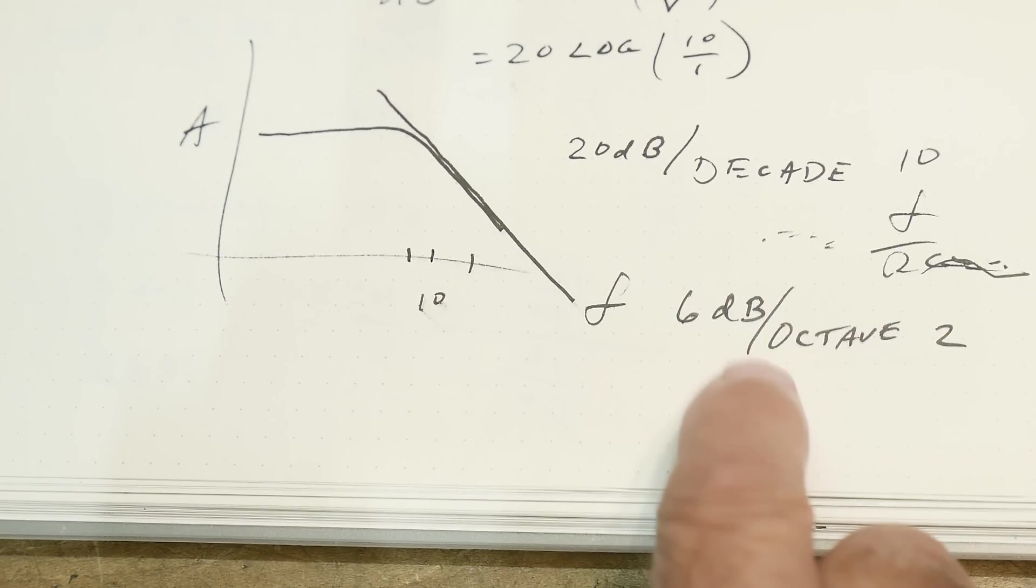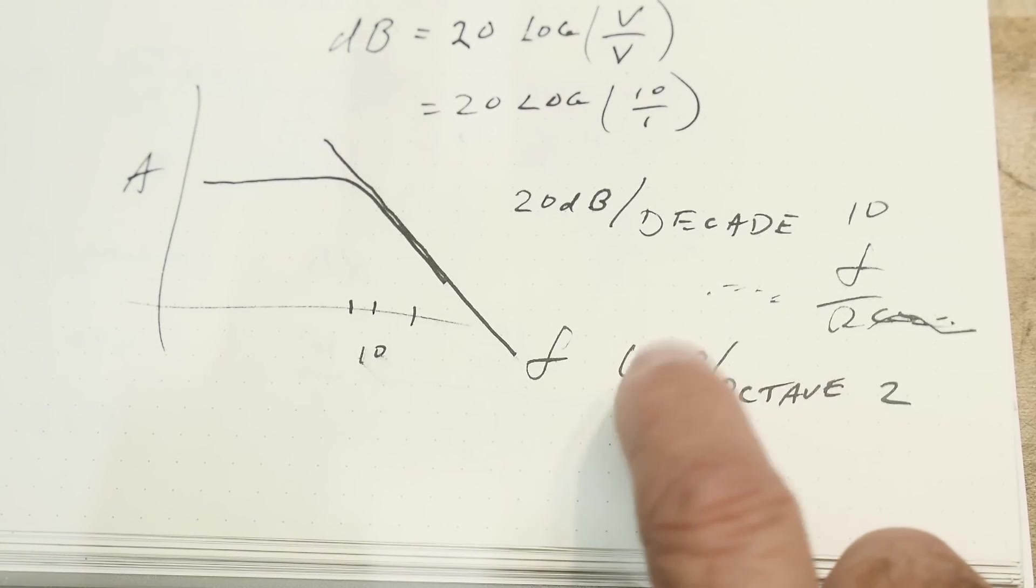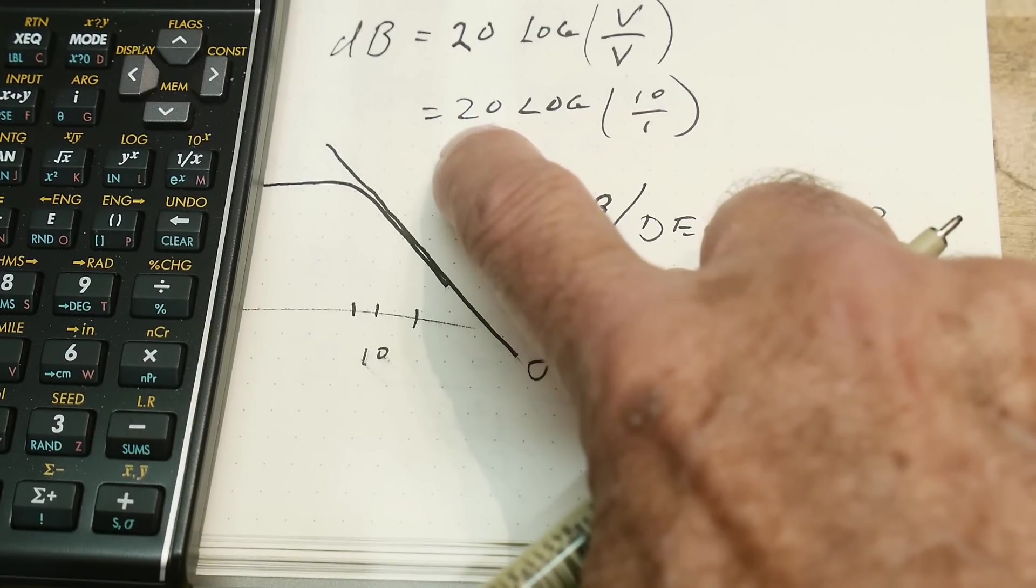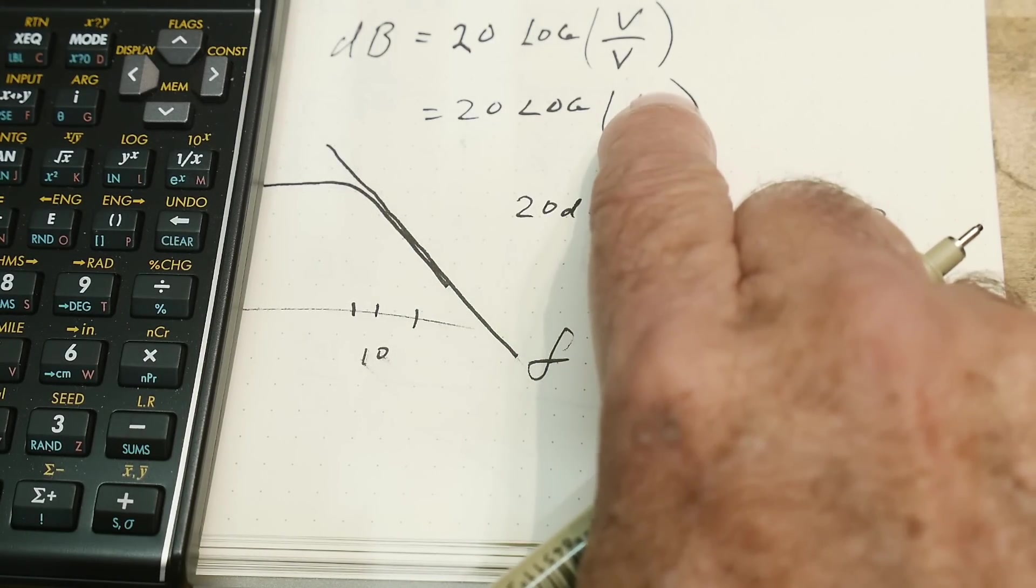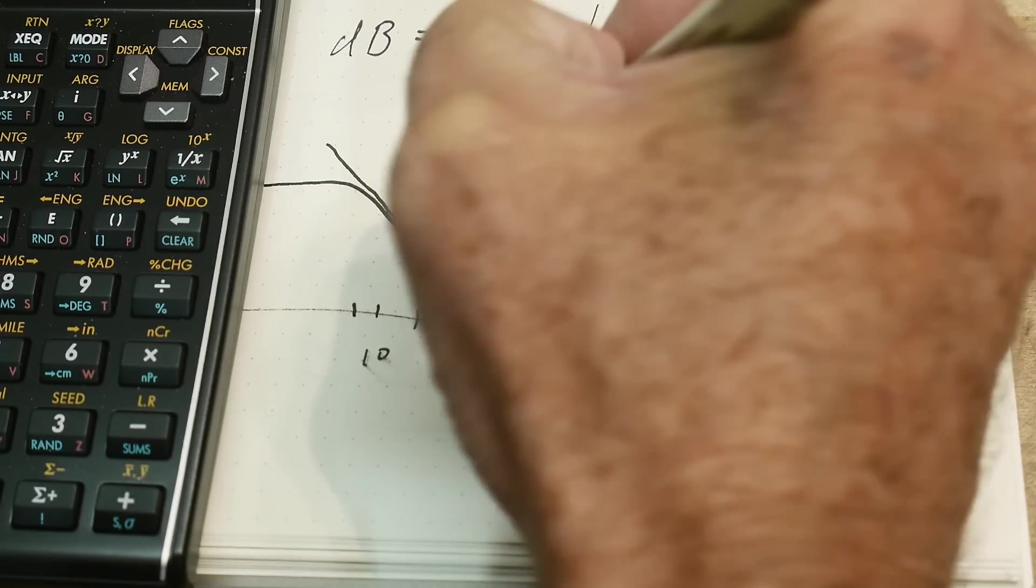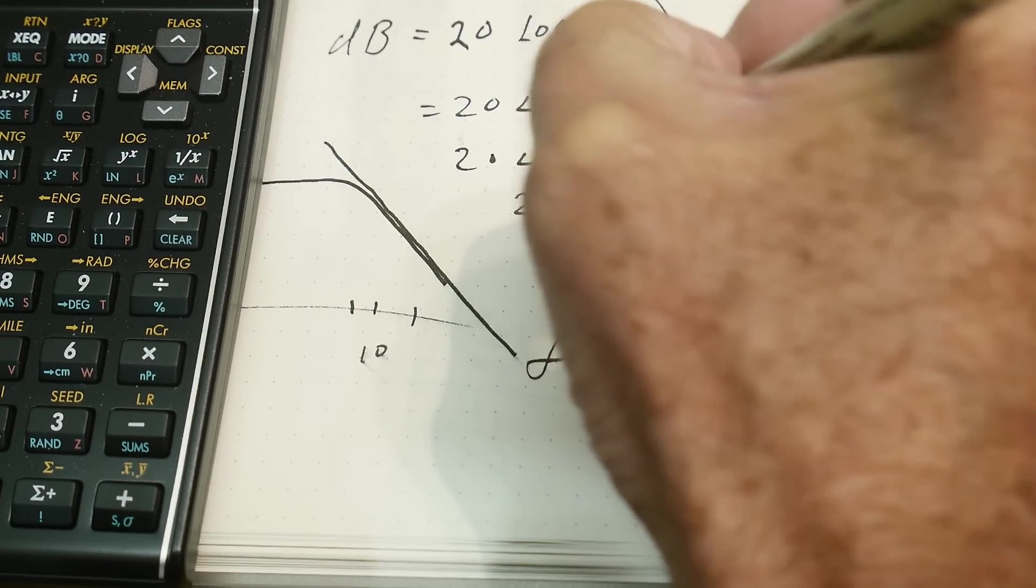Where's that 6 come from? Well that 6 comes from this formula here. We had 20 log 10 over 1. What if we had 20 log 2 over 1?